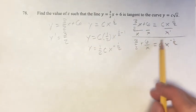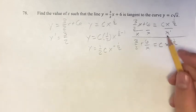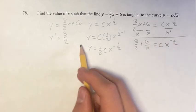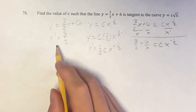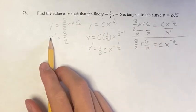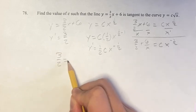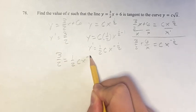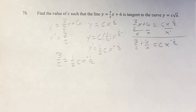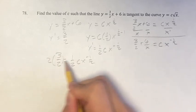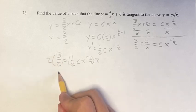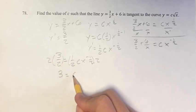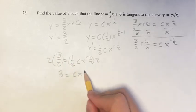And also, if we want to say this derivative is equal to this derivative, we can say 3 halves equals 1 half cx to the negative 1 half. Therefore, if we multiply both sides by 2, we get 3 equals cx to the negative 1 half.